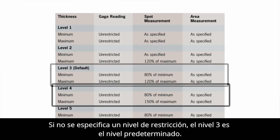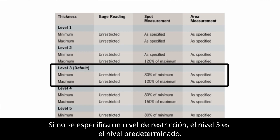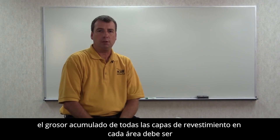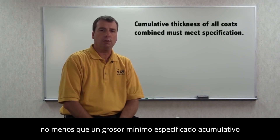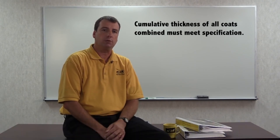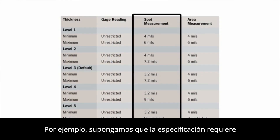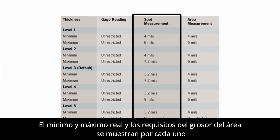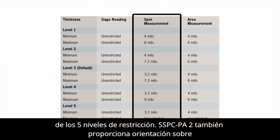If no restriction level is specified, then level 3 is the default level. For the purpose of final acceptance of the total dry film thickness, the cumulative thickness of all coating layers in each area must be no less than the cumulative minimum specified thickness and no greater than the cumulative maximum specified thickness. For example, assuming that the specification requires a 4 to 6 mil application of primer, the actual minimum and maximum spot and area thickness requirements are shown for each of the five restriction levels.